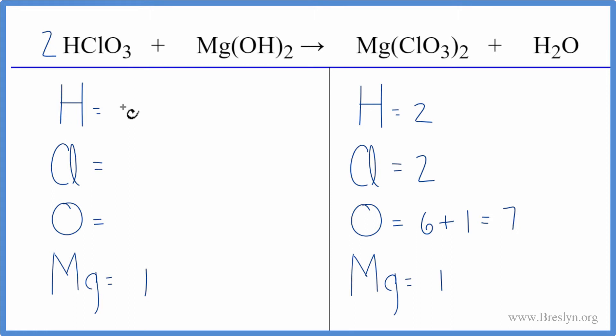I have one times the two, that gives me two hydrogens, plus I have these two times the one over here, four hydrogen atoms. One times the two, two chlorines, so we balance the chlorines.